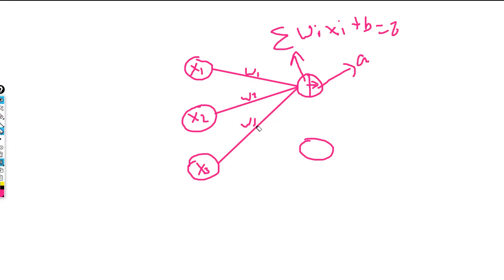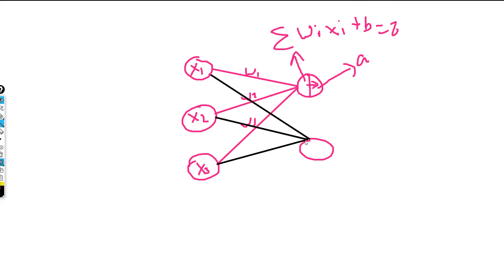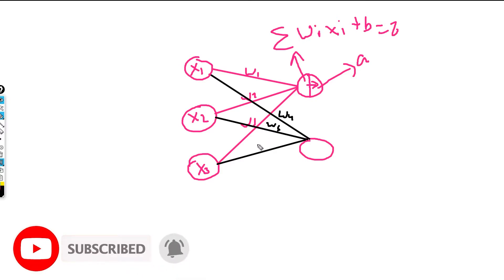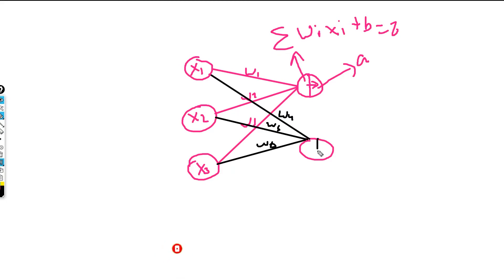The weights w1, w2, w3 are specific to one neuron — you cannot use those same values for another neuron. So the second neuron is going to have different weights, say w4, w5, w6, and a different bias. It will again compute z and pass it through an activation function to produce its own a.